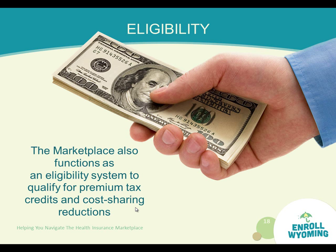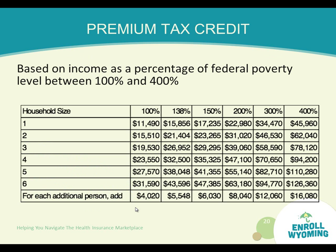The income bracket available for the premium tax credit: 100% indicates the baseline where credits start. Looking at household size, credits are available from 100% up to 400% of the federal poverty level, and the tax credits decrease from 100% to 400%. Once you exceed 400%, tax credits cease. Below 100%, there is no tax credit — individuals can shop on the marketplace but will pay full price. If Medicaid expands in Wyoming, those individuals would be included in that bracket.